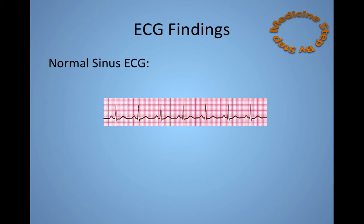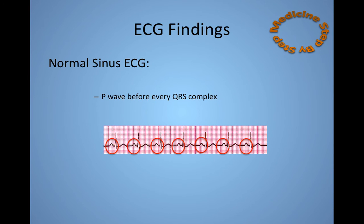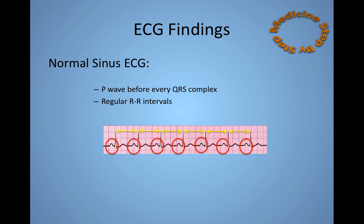Here you see the normal sinus ECG. There's a P-wave before every QRS complex, and the QRS complexes are regular, as seen by the regular R-R intervals, depicted by the yellow arrows.